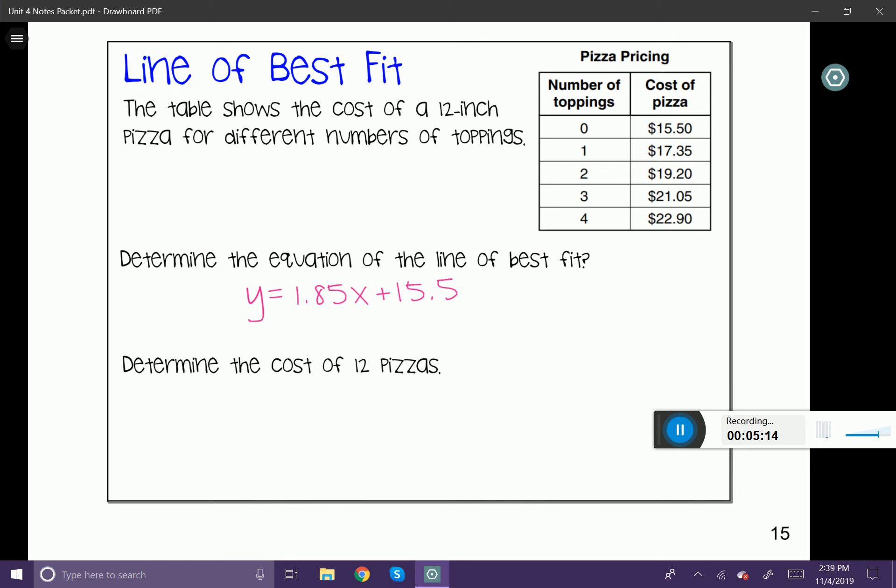Now, to determine the cost of 12 pizzas, what I would do is substitute 12 into my x value. So let's go ahead and do that. y equals 1.85 times 12 plus 15.5. This is math that's done right in the calculator. So go ahead and calculate that. I get 37.7. And the question is, what is the cost? So this is going to be $37.70 for 12 pizzas.